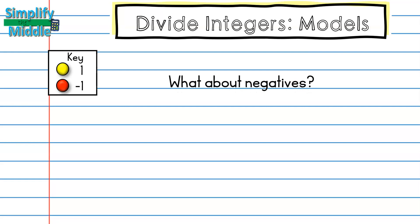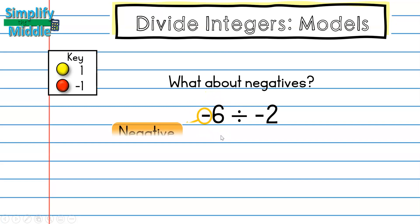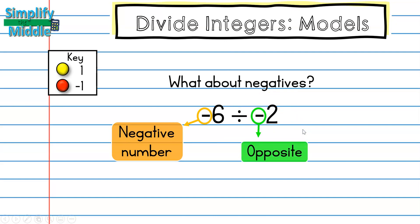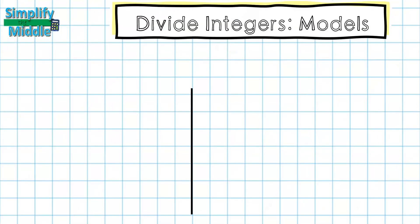What about negatives? Sometimes a negative refers to a red counter chip or a negative number on the number line. Anytime our dividend has a negative, it means a red counter chip or a negative number on the number line. If our divisor has a negative, that is where we use opposites — and we apply the opposite at the end of the problem.